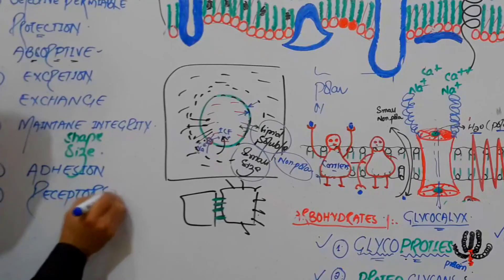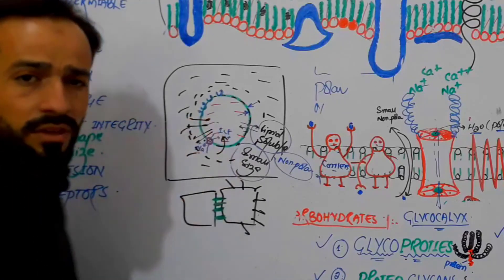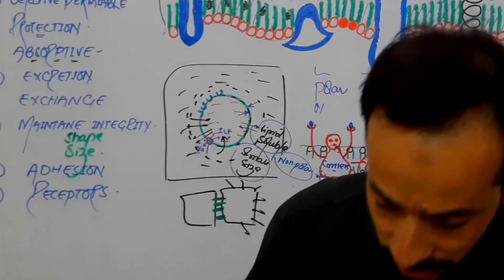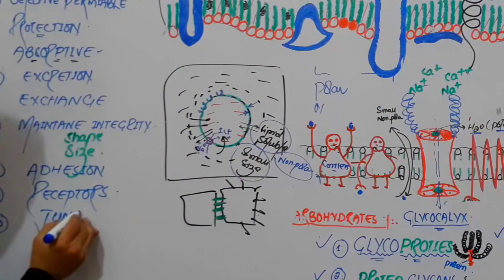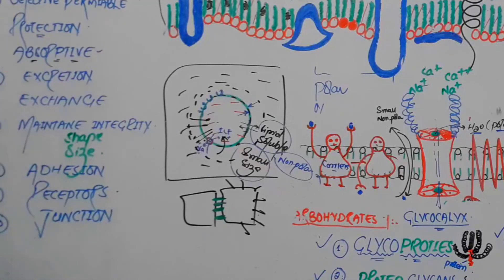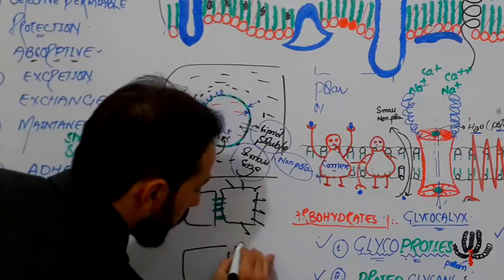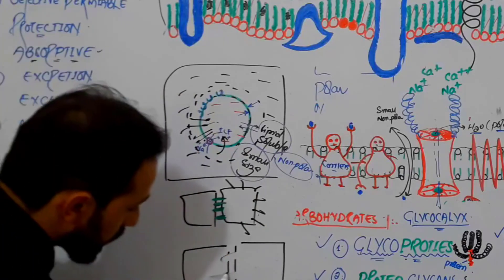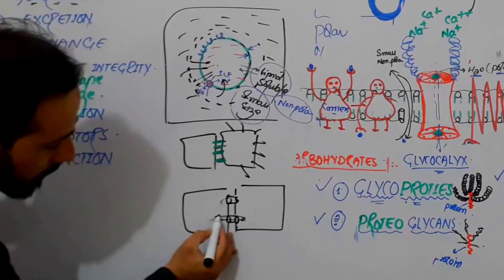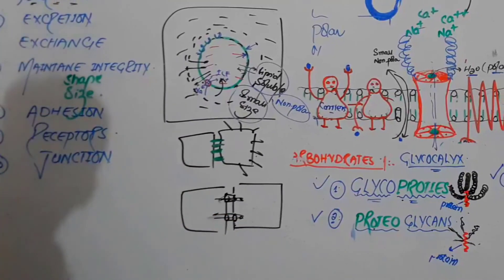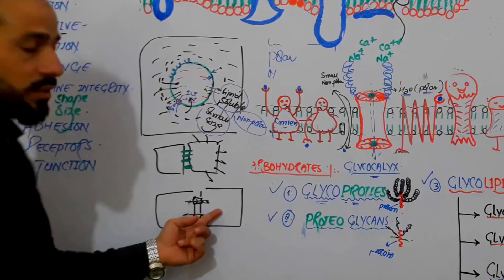The cell membrane has different types of receptors for certain hormones, enzymes, and other substances. The cell membrane also has junctions — gap junctions between two cells — through which the cells can communicate and exchange different substances with each other. So the cell membrane also acts as a junction between two cells.